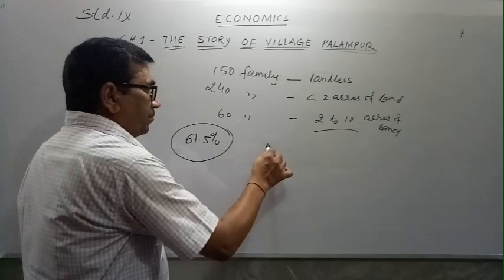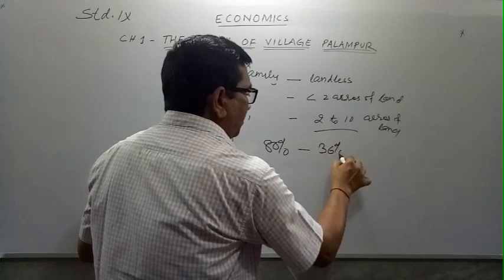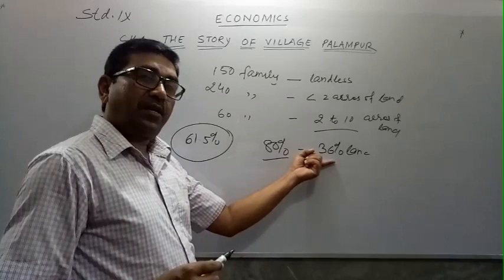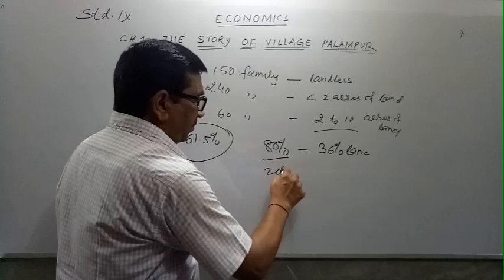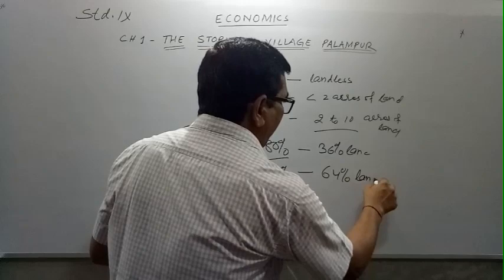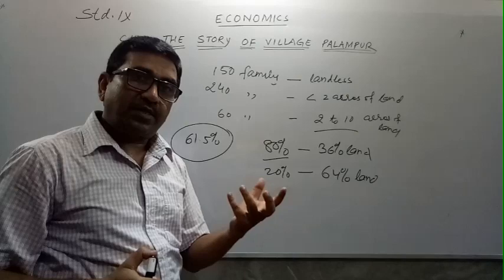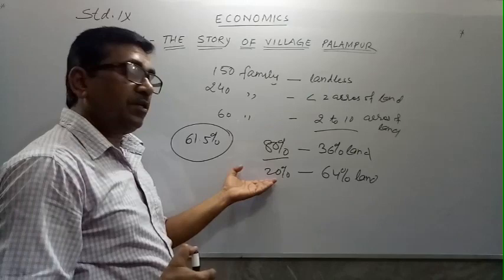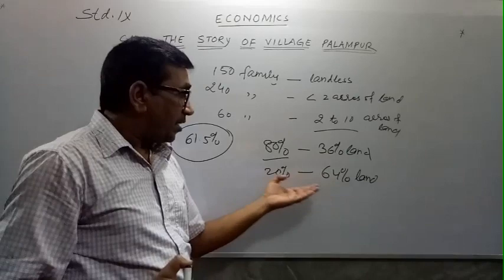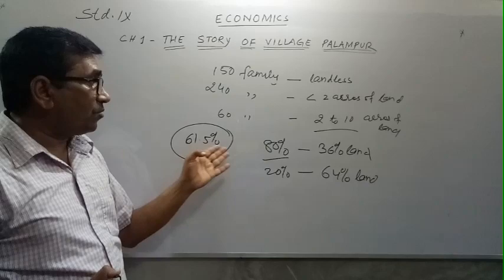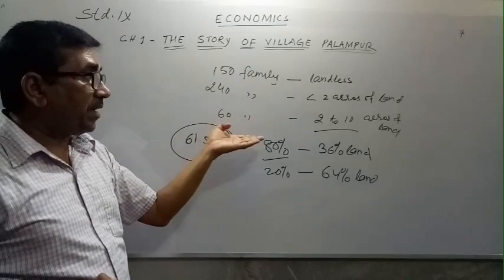Small and marginal farmers are 80 percent of the farming population but hold only 36 percent of the land. The big farmers, which are only 20 percent, hold 64 percent of the land. This means a large population of small farmers is holding very little land.